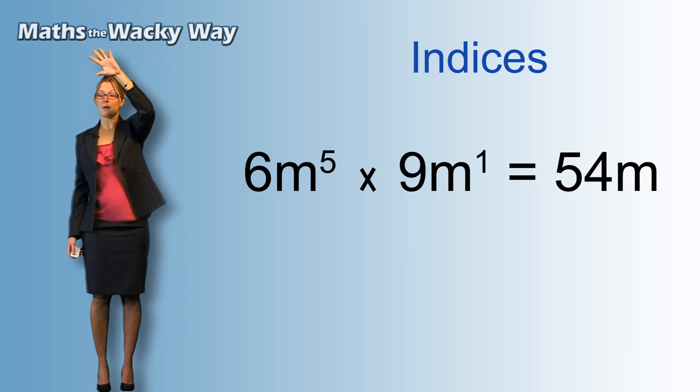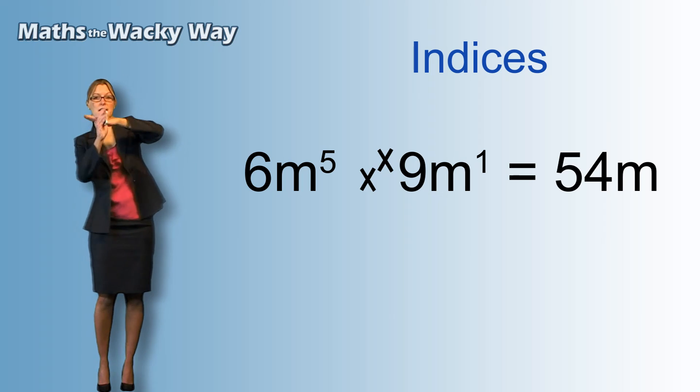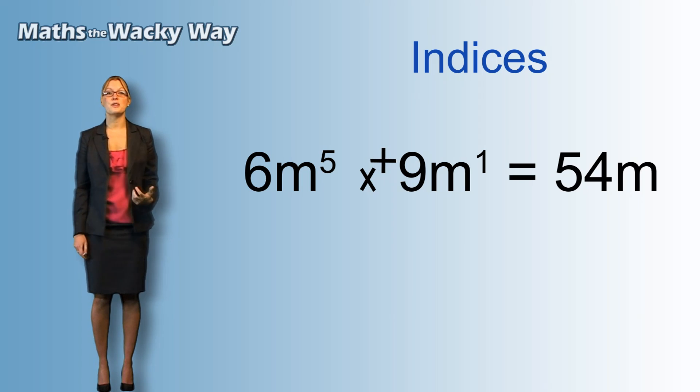5 up in the air and the 1 up in the air, we take the multiplication sign up, it becomes a plus when it's windy and twists, so that gives us 54m to the power of 6.